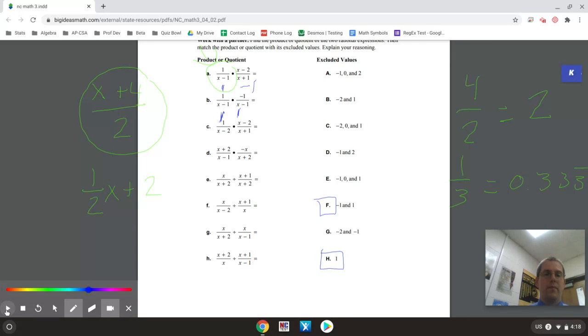For c, you could have a value of 2 and negative 1. And for d, you could have had a value of 1 and negative 2. So I hope you were able to get those right. For e, start out the same way.